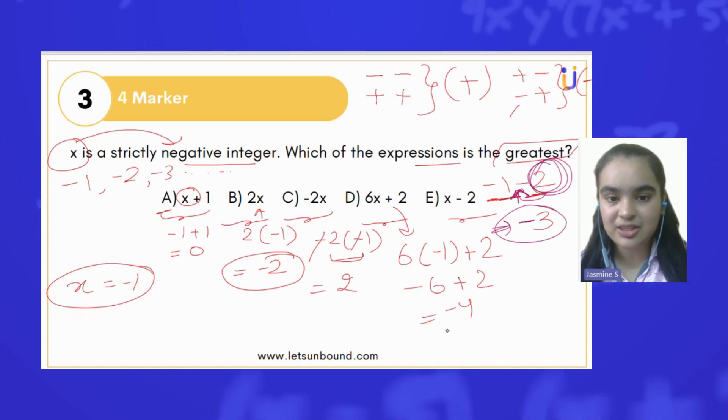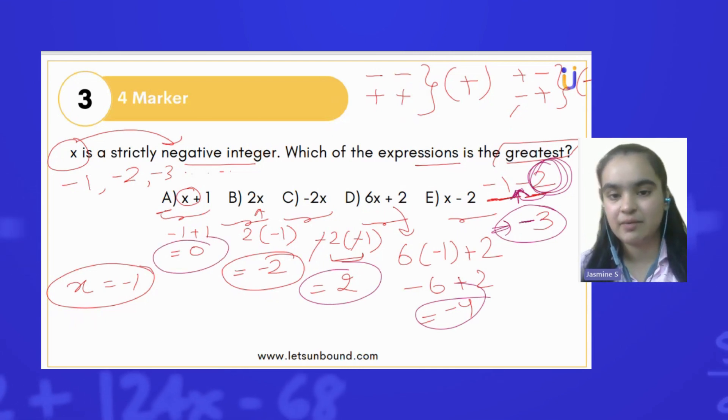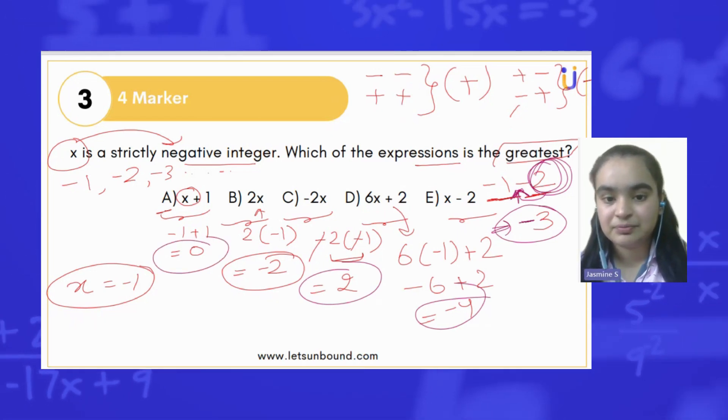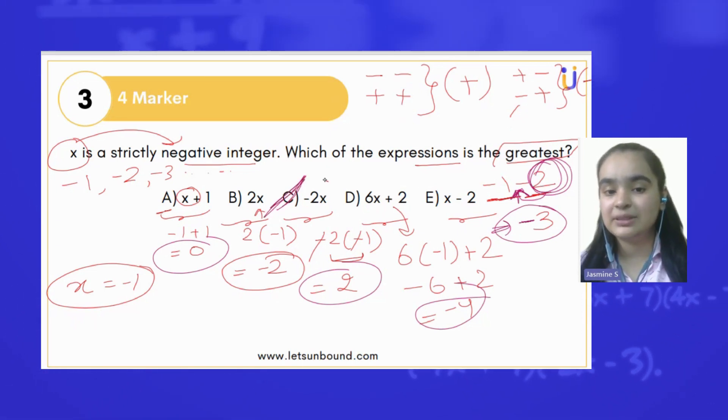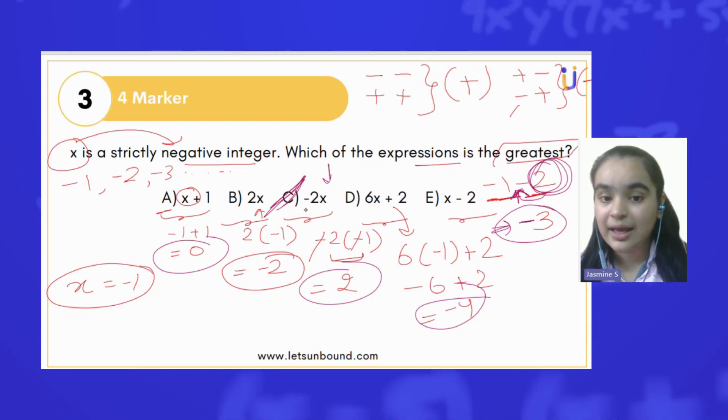From here you can see which one is the biggest or greatest answer—that is option number C. You can try with any example; always option number C will come.